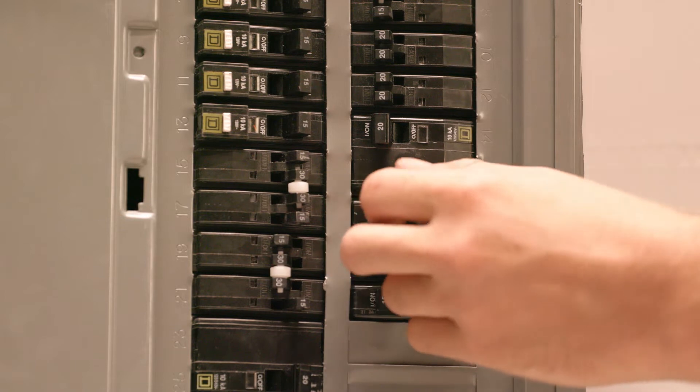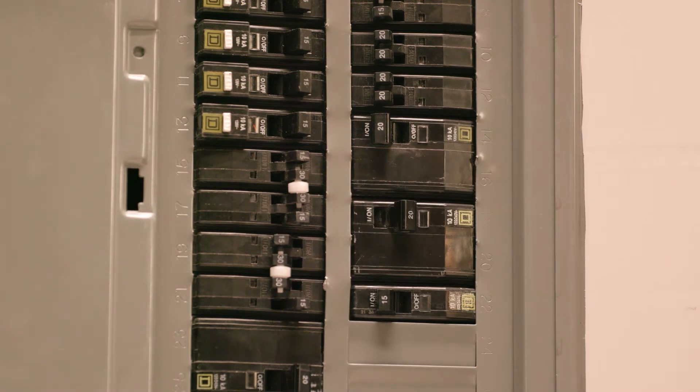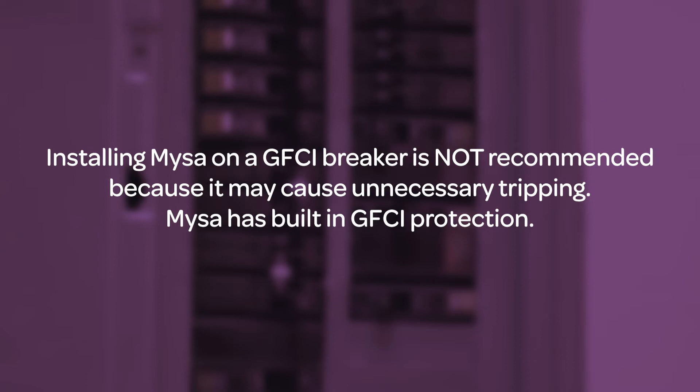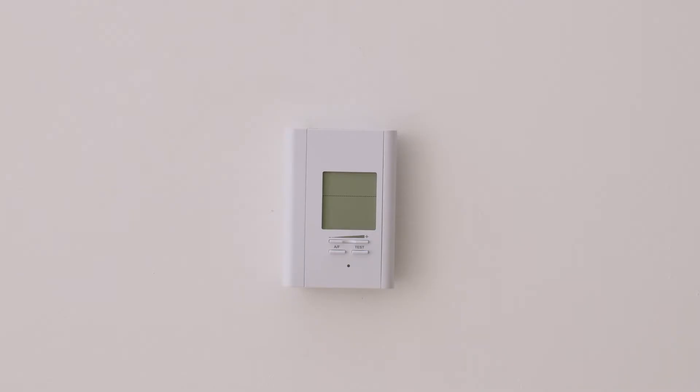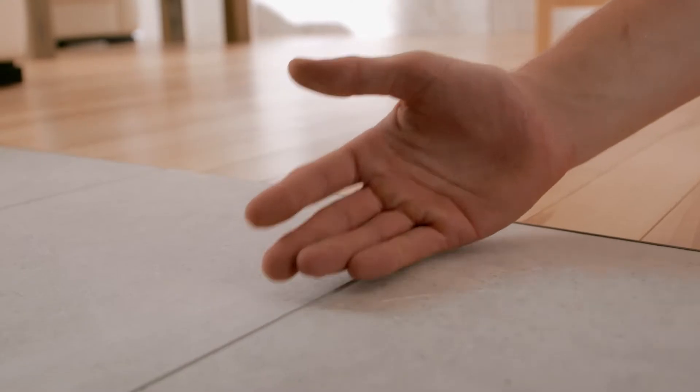First and most importantly, we'll go to your home's electrical panel and locate the correct non-GFCI breaker and switch it off. Now that you've turned the breaker off, test that there's no power to the heater by turning it up and waiting a few minutes to feel for heat.